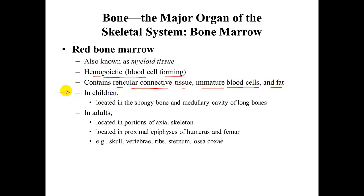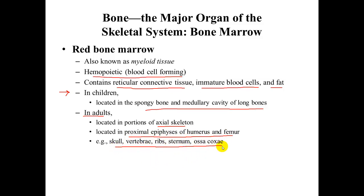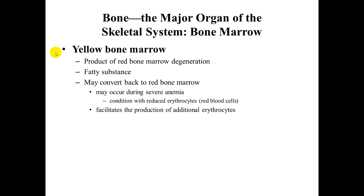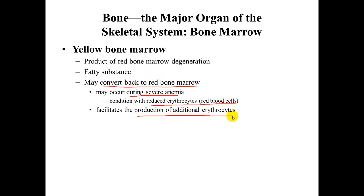In children, red bone marrow is located in the spongy bone and medullary cavity of long bones. In adults, it is in portions of the axial skeleton, mainly in the proximal epiphyses of the humerus and femur, and in places like the skull, vertebrae, ribs, sternum, and os coxae. Yellow bone marrow is red bone marrow that has degenerated and incorporated a lot of fat. Interestingly, it may convert back to red bone marrow under times of stress, such as severe anemia, helping the body produce additional erythrocytes or red blood cells.